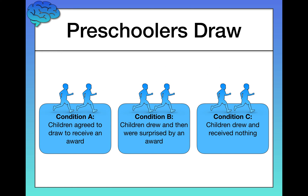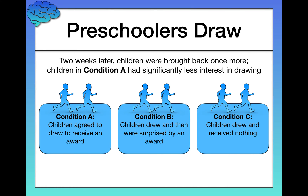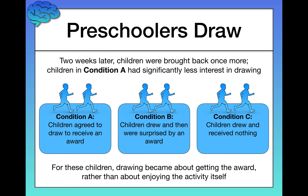Two weeks later, these preschoolers were brought back into the lab. Children in condition A had significantly less interest in drawing again two weeks later. Children in conditions B and C, however, wanted to draw and had a lot of intrinsic motivation to do so. Why did condition A children lose their motivation? For those children, drawing became more about getting the award rather than enjoying the activity itself. If you're being paid for something, even if you enjoy it, it can become more about getting paid — which reduces natural enjoyment and inhibits intrinsic motivation.